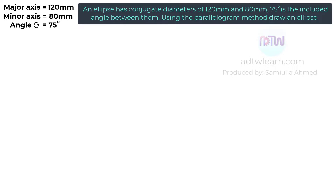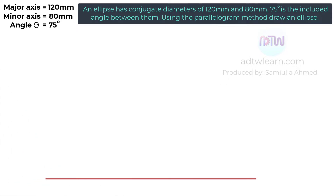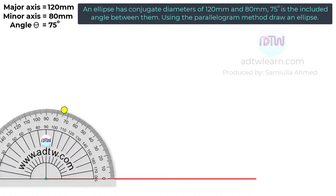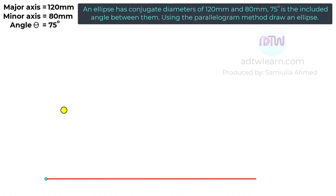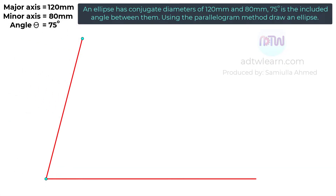We have to construct this ellipse by using a parallelogram method. Therefore, first we need to draw a parallelogram having dimensions of 120 millimeters and 80 millimeters. Take a ruler and draw a horizontal line of 120 millimeters in length. Next, take a protractor and mark a point at 75 degrees. Using this point as a reference, draw a line inclined at 75 degrees. Take a ruler and mark 80 millimeters length on this inclined line. Using the drafter or a roller scale, draw the remaining sides as shown.